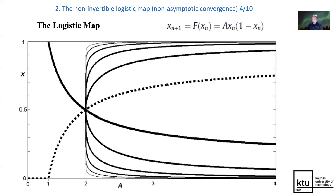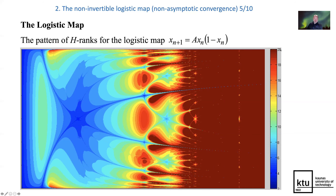The pattern of H-rank is able to show the intertwined manifolds — both stable and unstable — and non-asymptotic convergence. You can observe the first period doubling bifurcation, the homoclinic bifurcation, and the pre-images of the period-one orbit, which is stable until the period doubling bifurcation and unstable after that. We can observe all these pre-images, and note that the maximum order of the Henkel matrix used in this plot is 20.